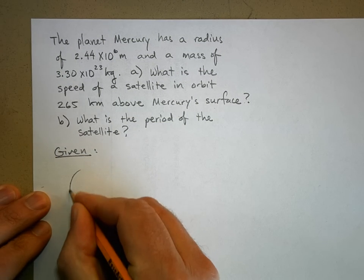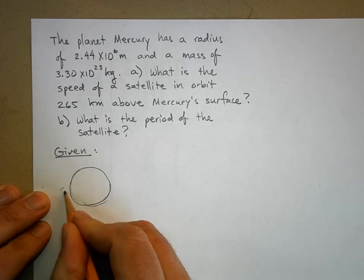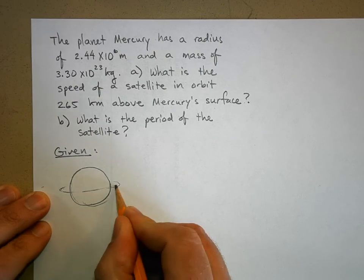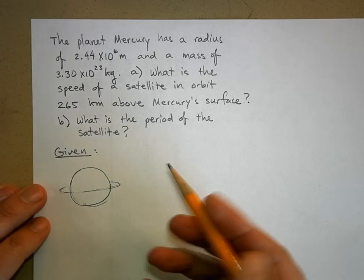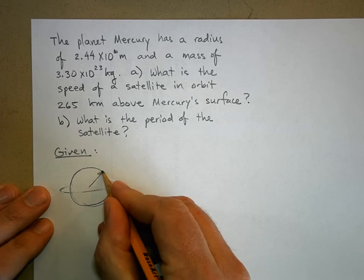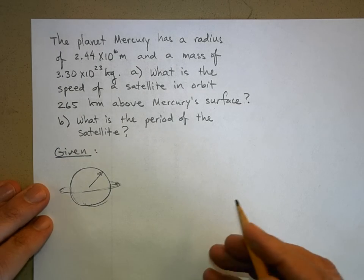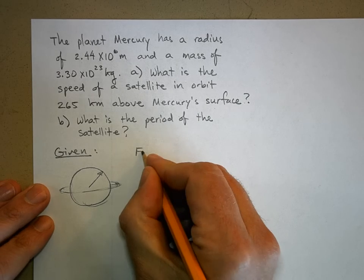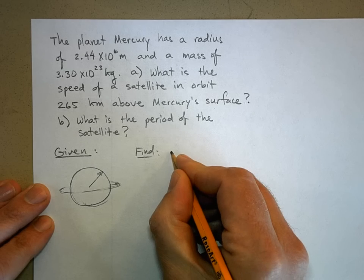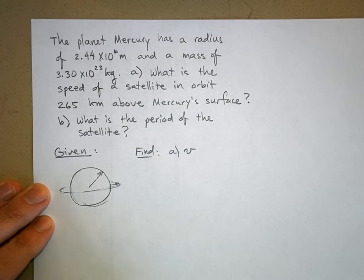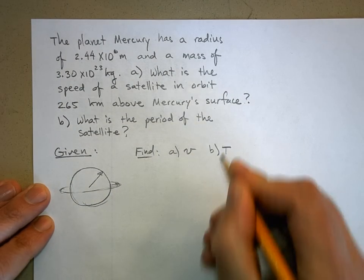Here's Mercury and here we've got a satellite that's in orbit around Mercury like this. We know the radius is given and we know the height is given. We want to find the speed and we want to find the period, capital T.